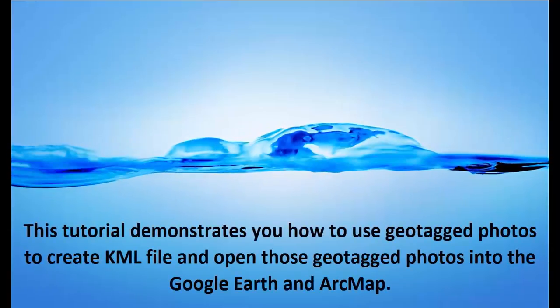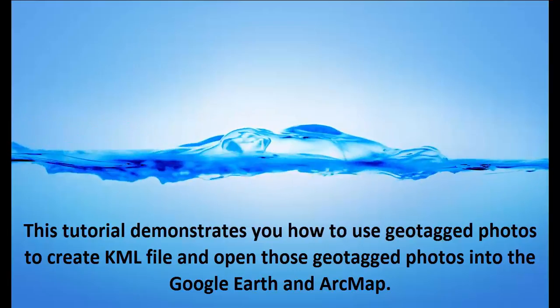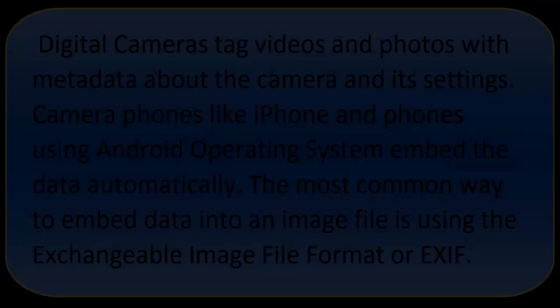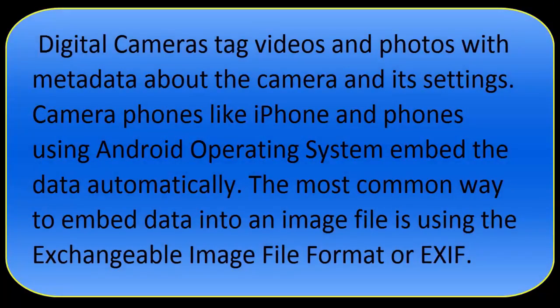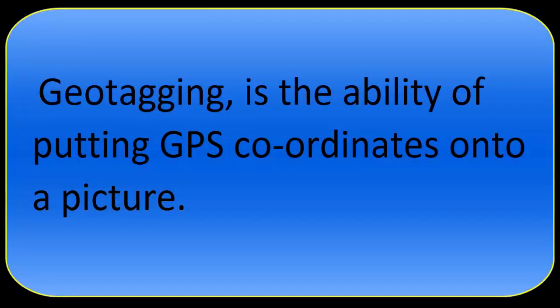This tutorial demonstrates how to use geotagged photos to create a KML file and open those geotagged photos in Google Earth and ArcMap. Digital cameras take videos and photos with metadata about the camera and its settings. Camera phones like iPhone and Android devices embed this data automatically. The most common way to embed data into an image file is using the Exchangeable Image File Format, also known as EXIF. In a nutshell, geotagging is the ability to put GPS coordinates onto a picture.